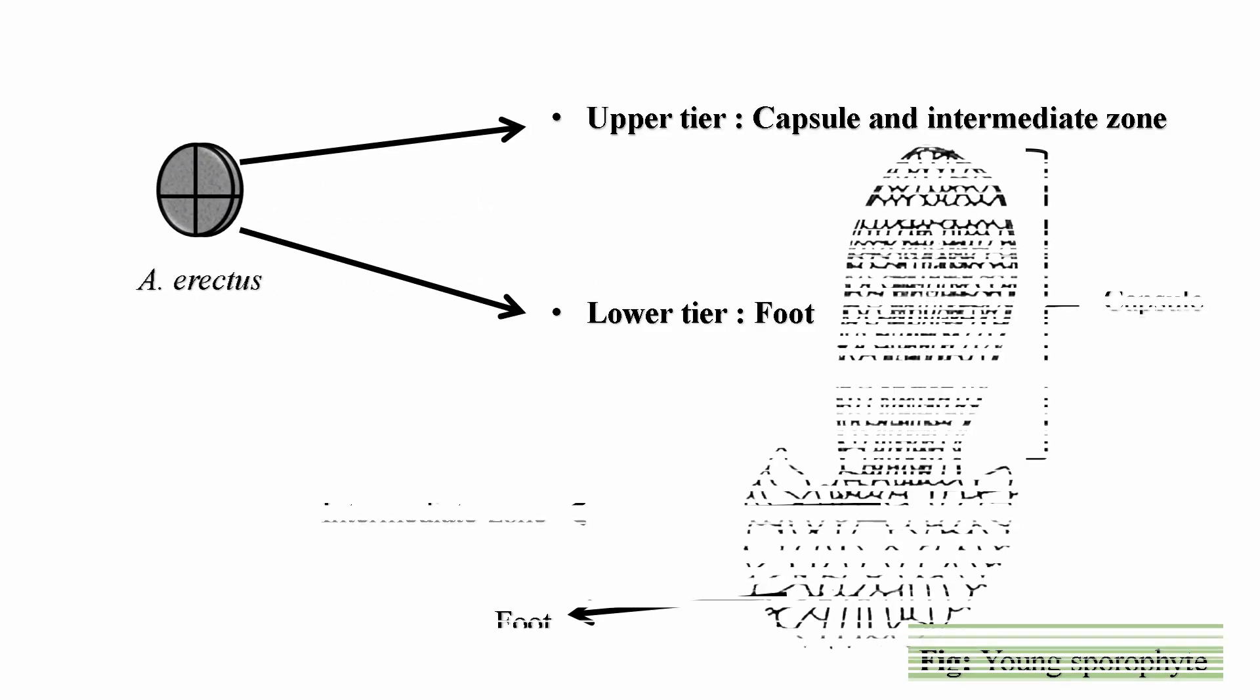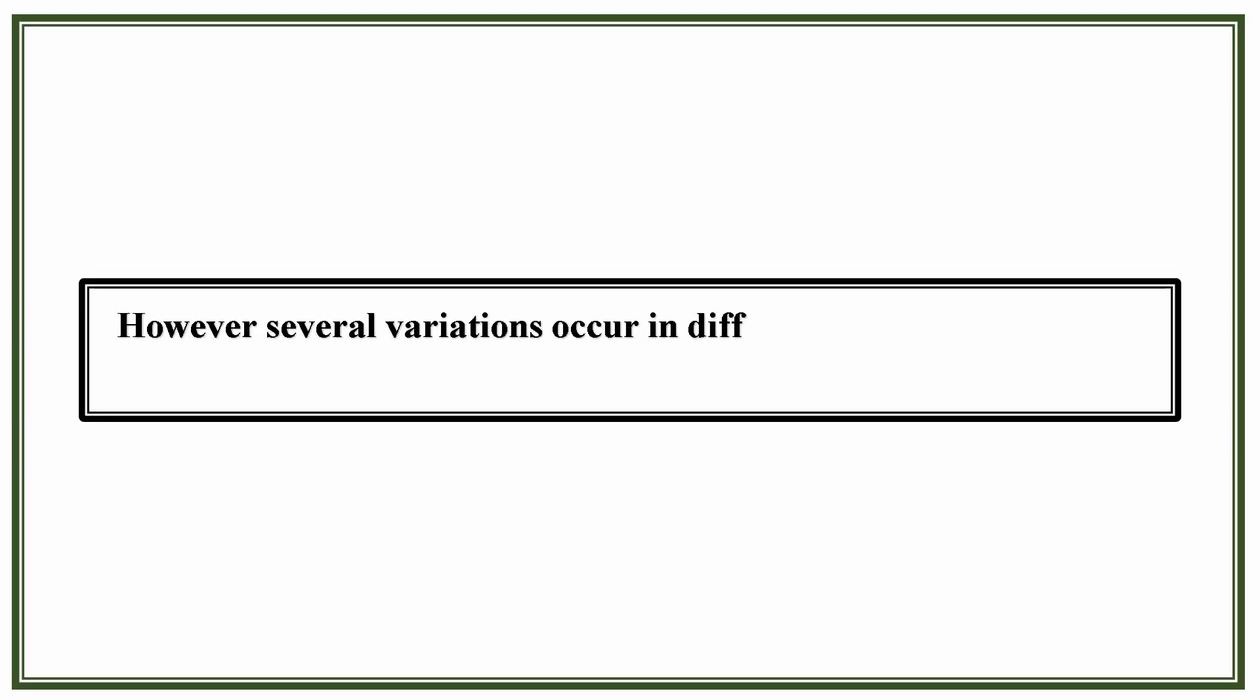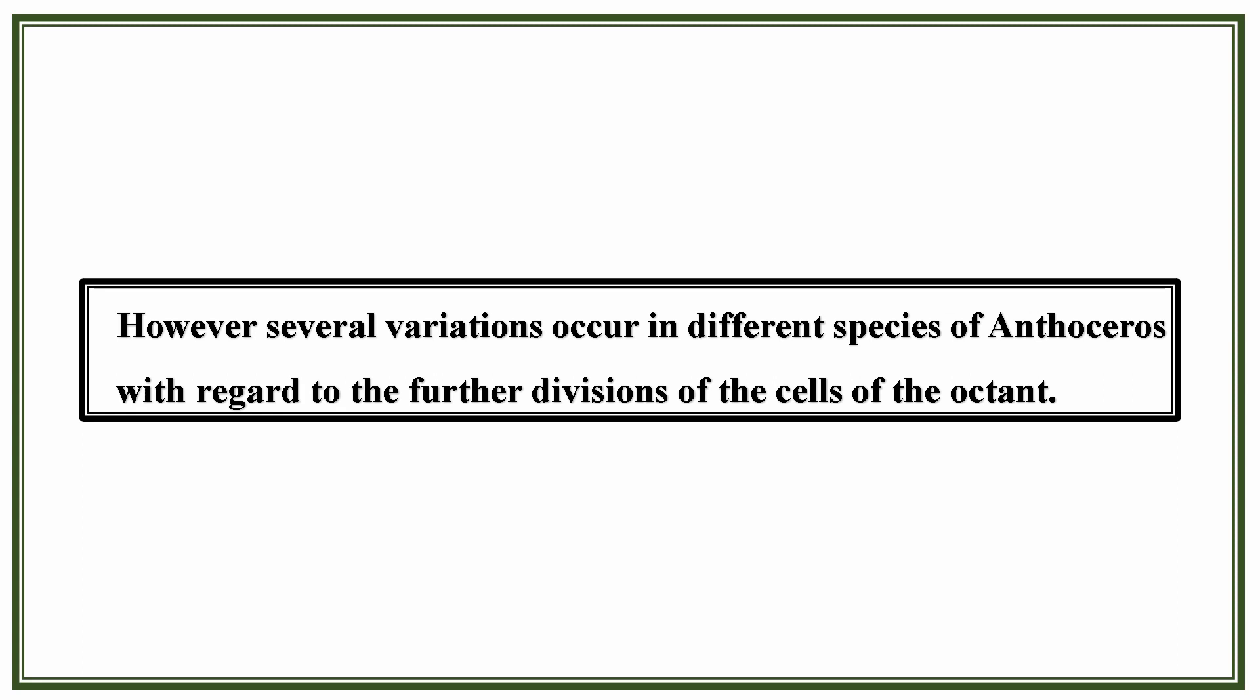According to Mehra and Handoo, the upper tier in anthoceros erectus forms the capsule and the intermediate zone whereas the lower tier gives rise to the foot. However, several variations occur in different species of anthoceros with regard to the further division of the cells of the octant.